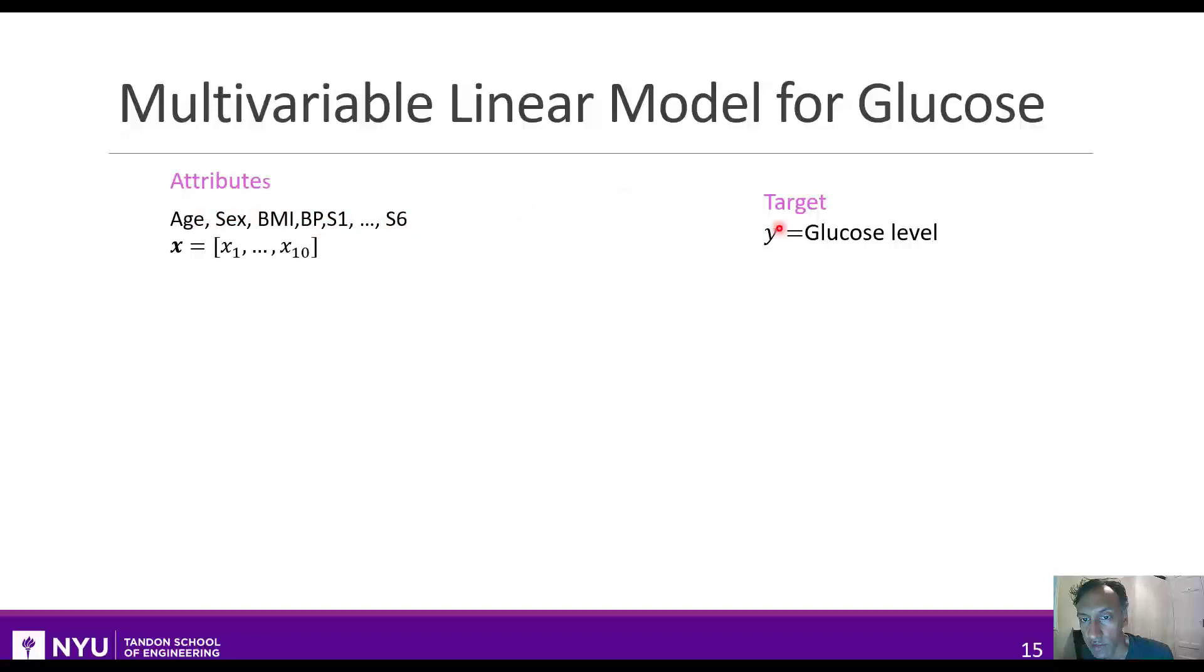We want to try to predict from these attributes the target variable. That is, we want to find a function that produces a prediction, y-hat, as a function of this vector of 10 measurements.